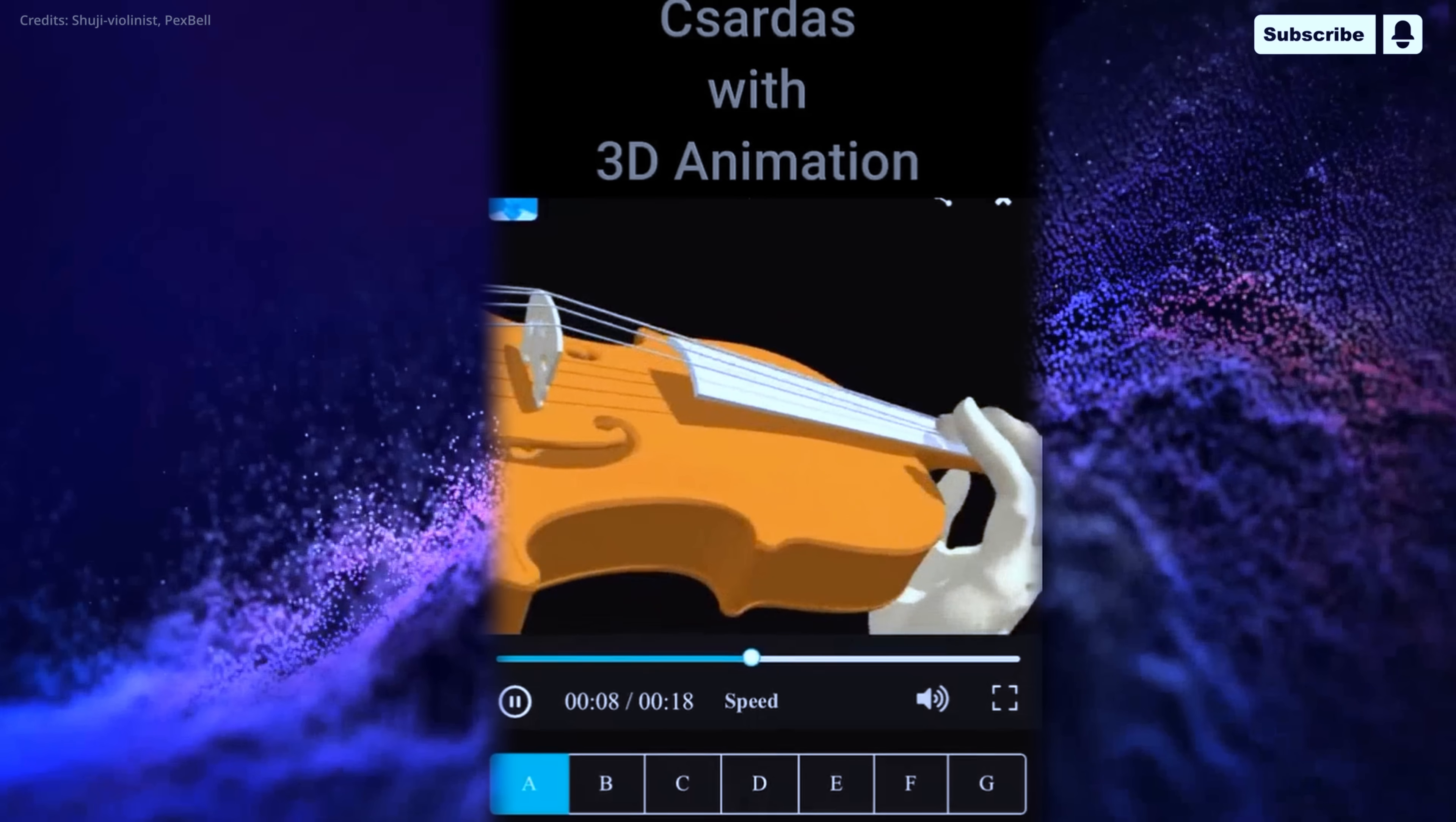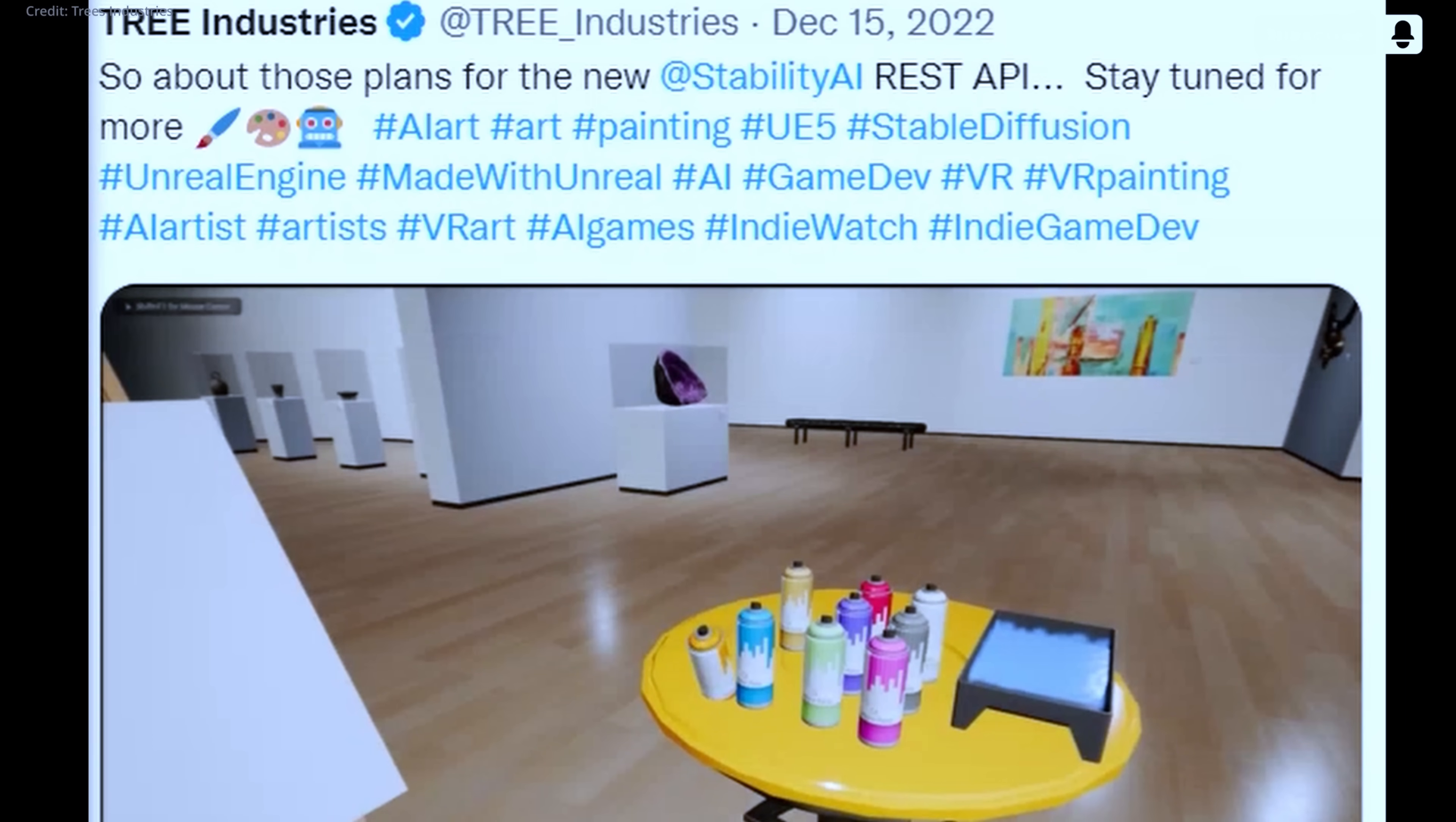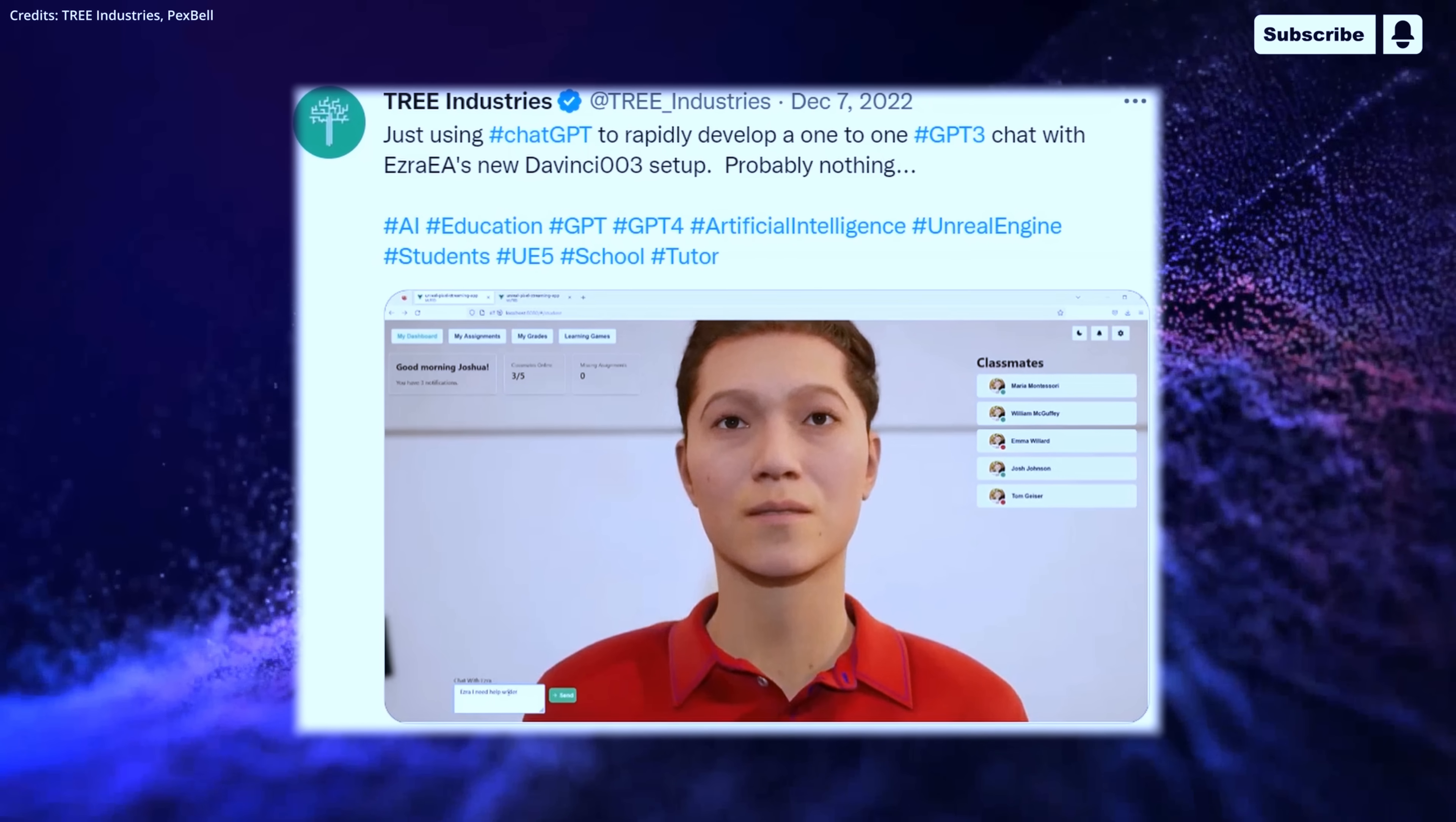For AI text recognition to be effective in removing doubts about the authenticity of text, it would need to be standardized across all text generators. There are currently some initial attempts to develop AI text recognition tools such as GPT Zero or Cross Flag, but there is no information yet on their reliability.